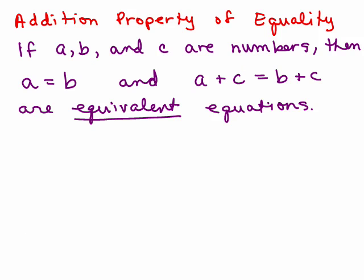One of the first properties we're going to use is called the addition property of equality. It says if a, b, and c are numbers, then a = b and a + c = b + c are called equivalent equations.